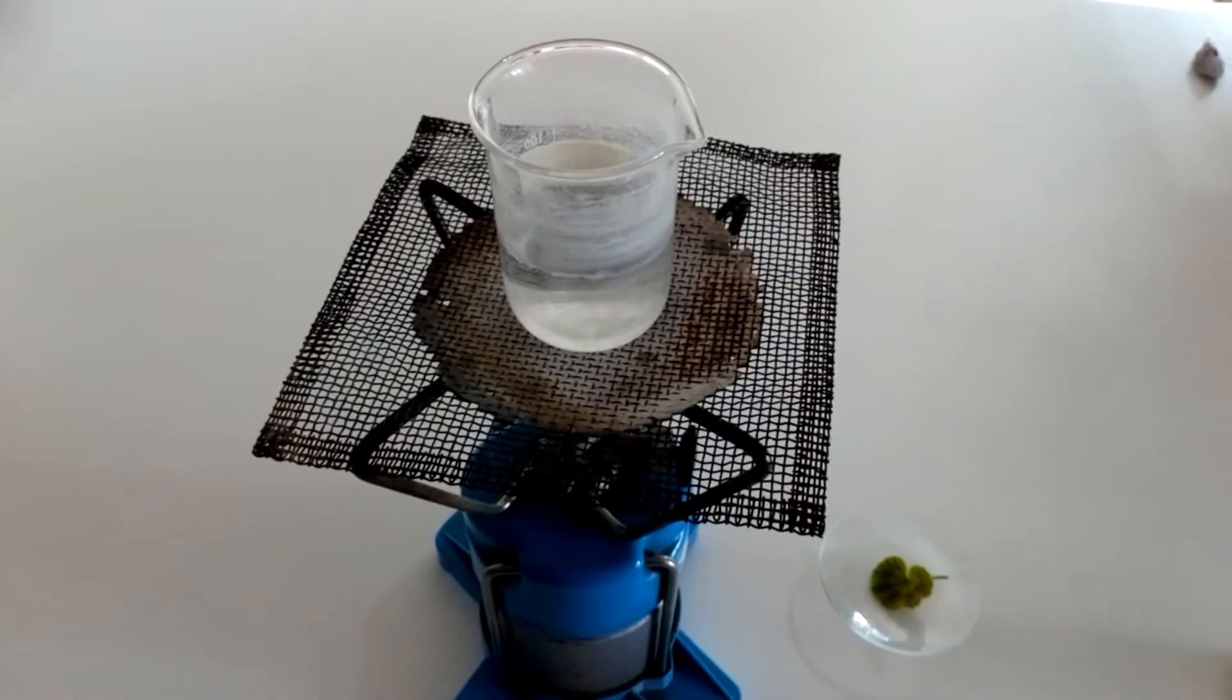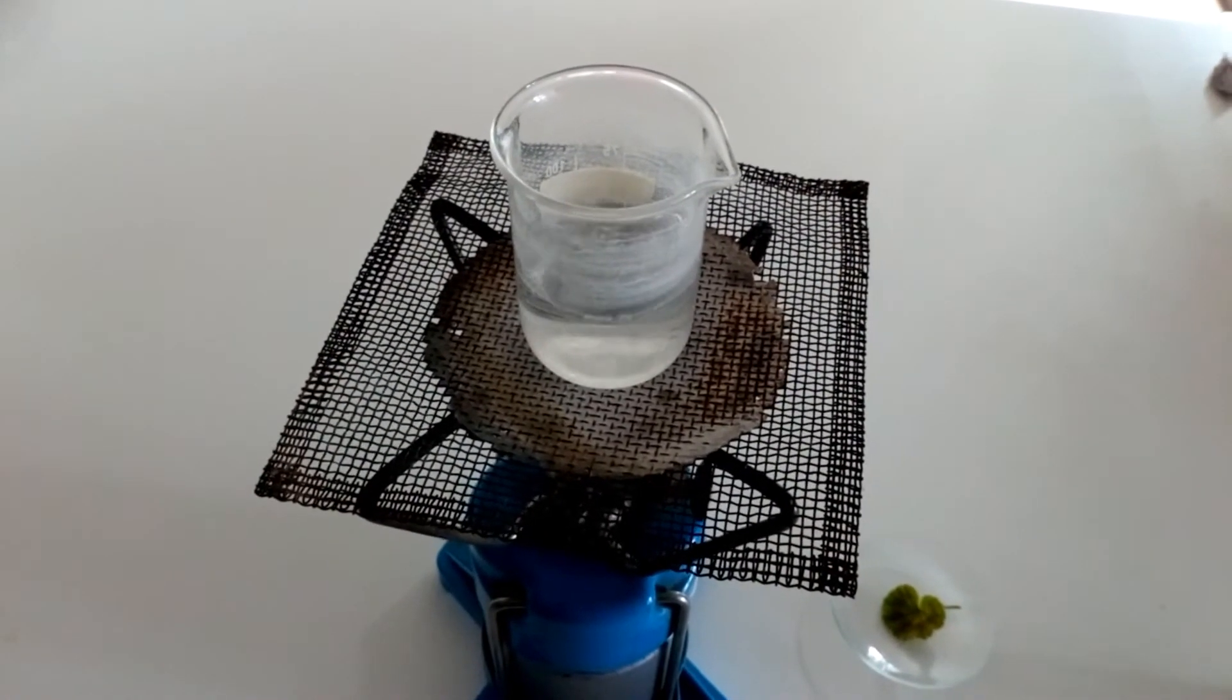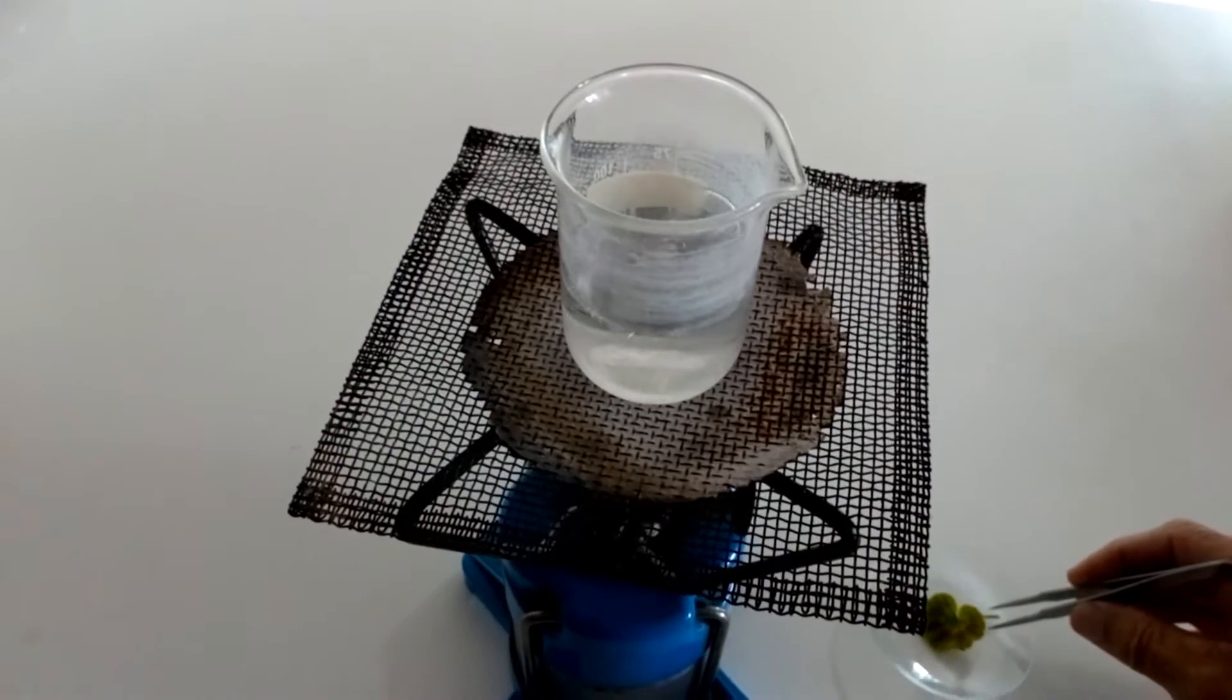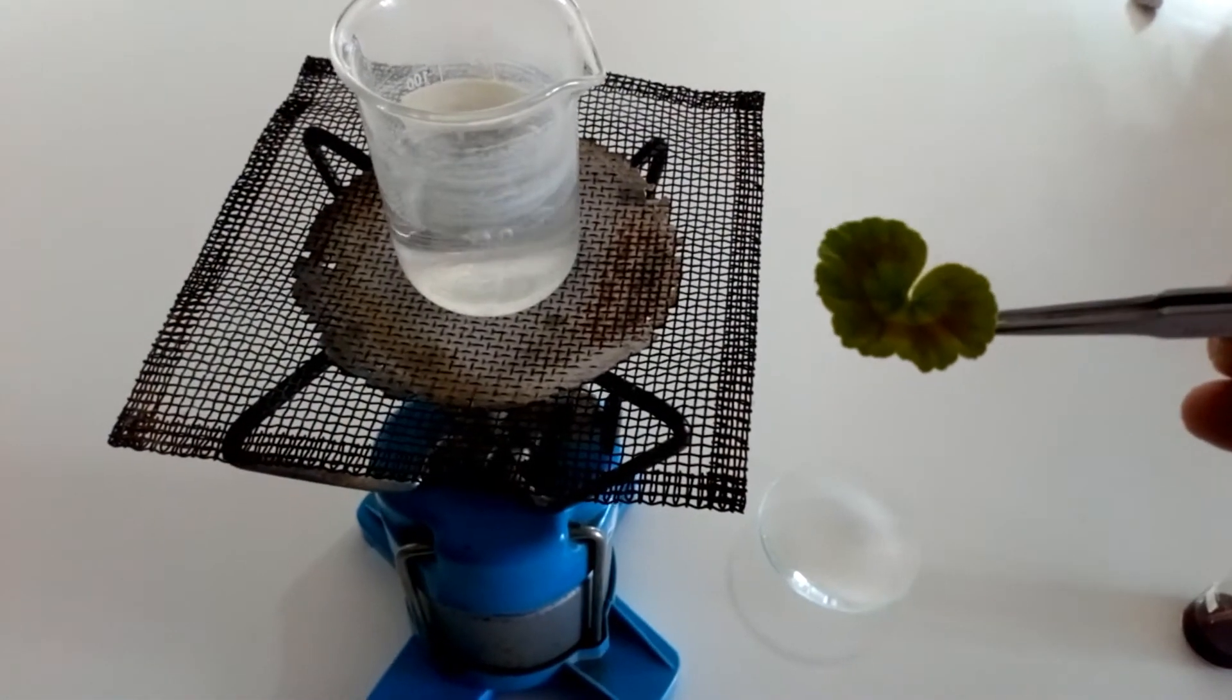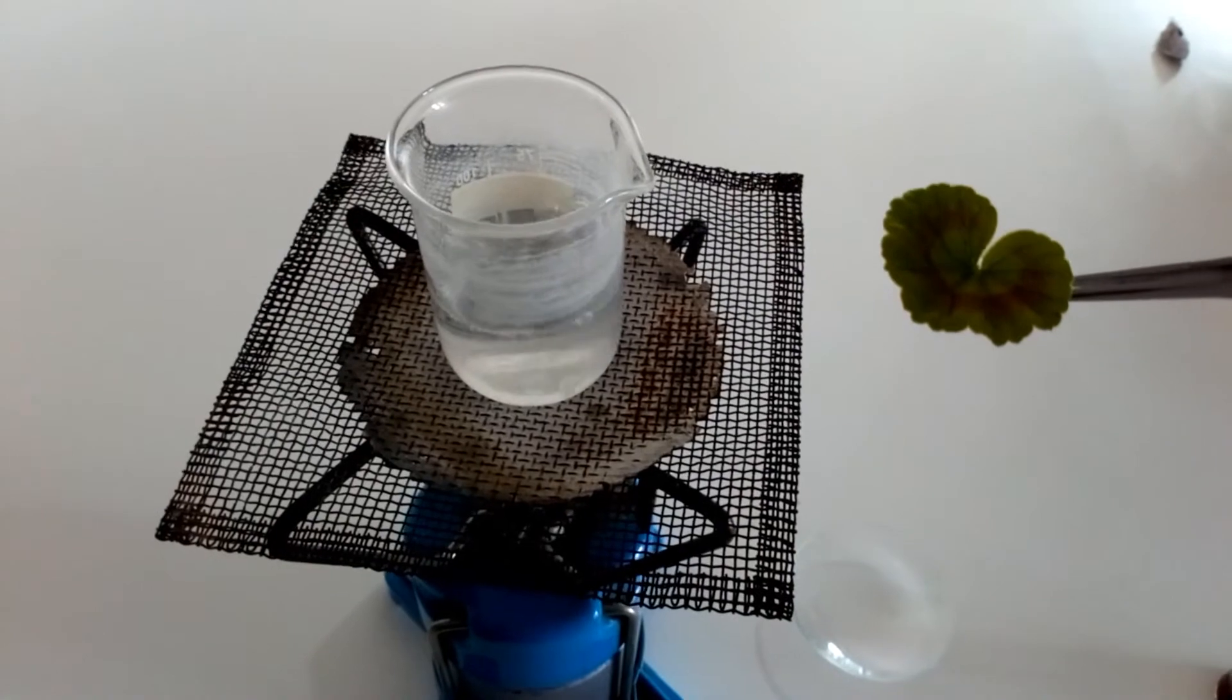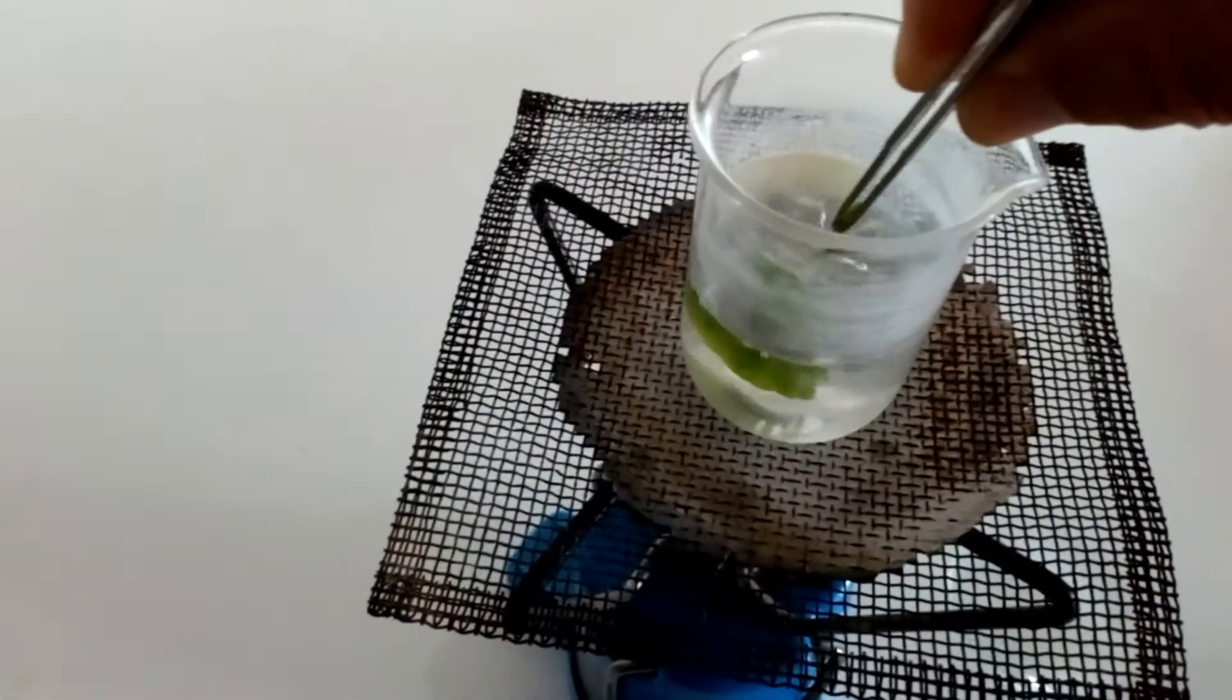So our first stage is to make the leaves so that the cell wall begins to break down, and we also stop all the things happening inside the leaf. Things happening inside the leaf, the chemical reactions, that's called metabolism. And in order to stop all the metabolism working, we're going to put the leaf into some boiling water.